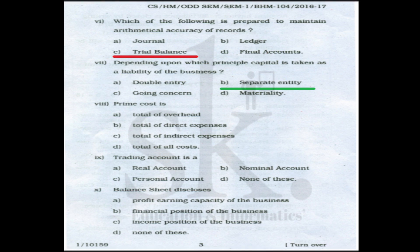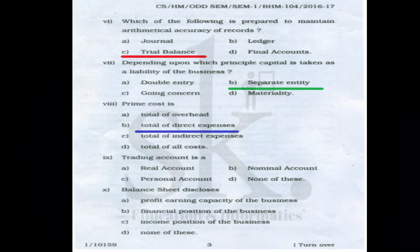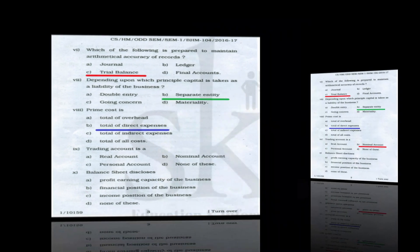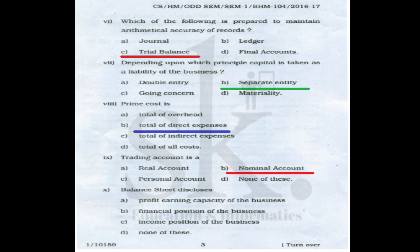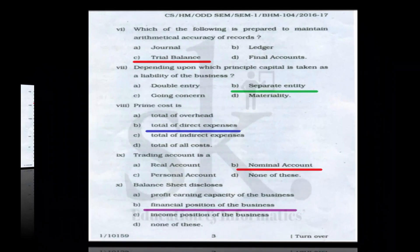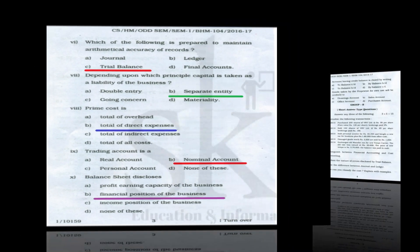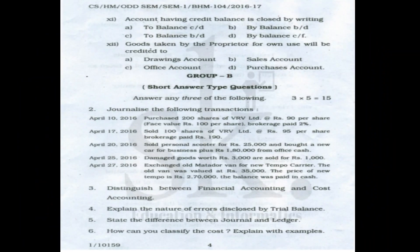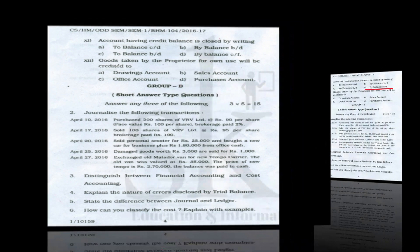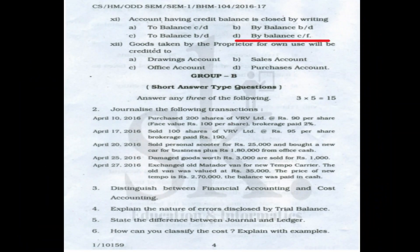Question number eight: prime cost is again the total of direct expenses. Question number nine: a trading account is basically a nominal account that takes all expenses and losses into consideration. Question number ten: balance sheet discloses the financial position of the business. The correct option is B.